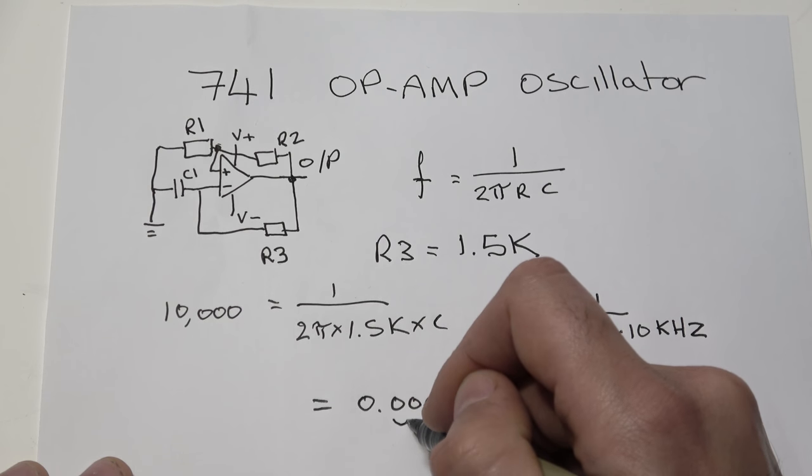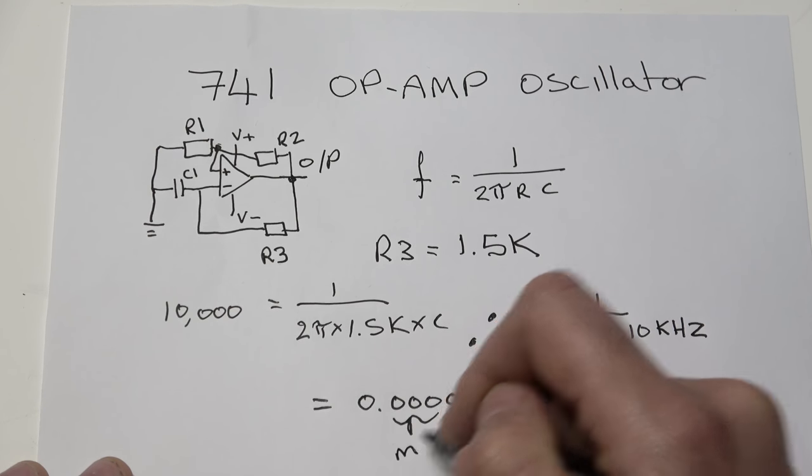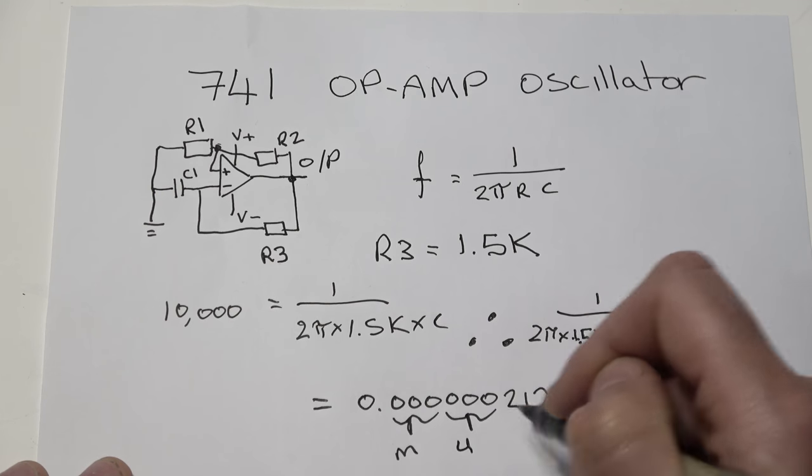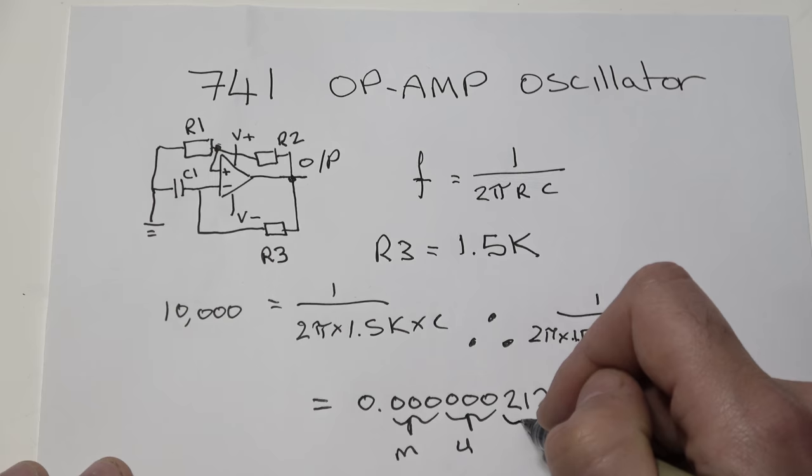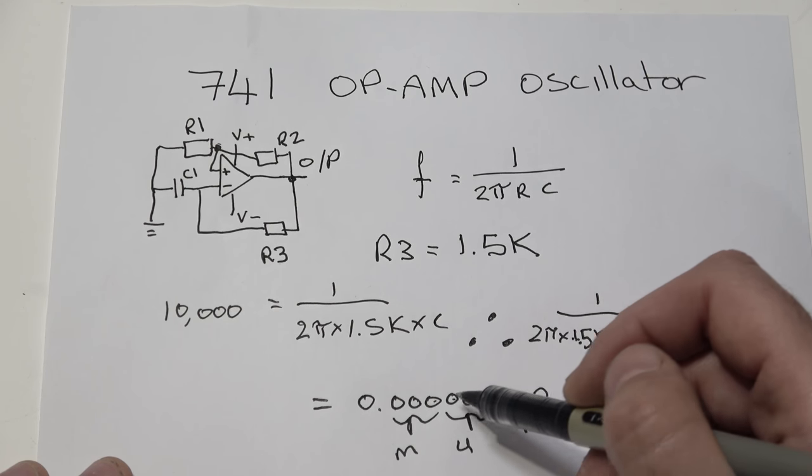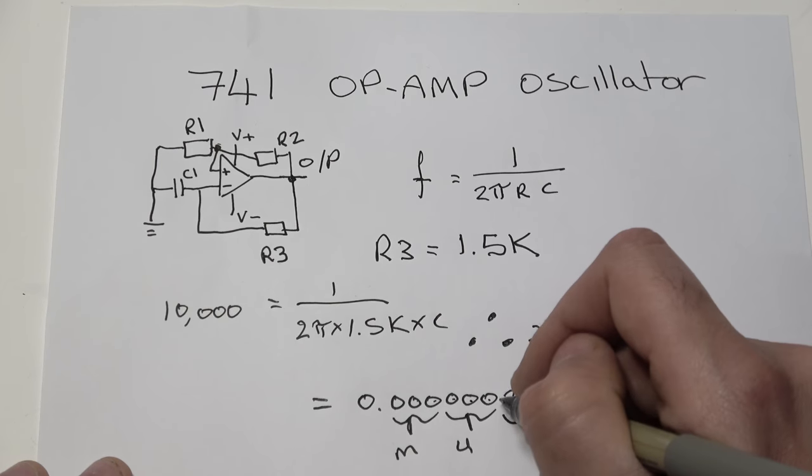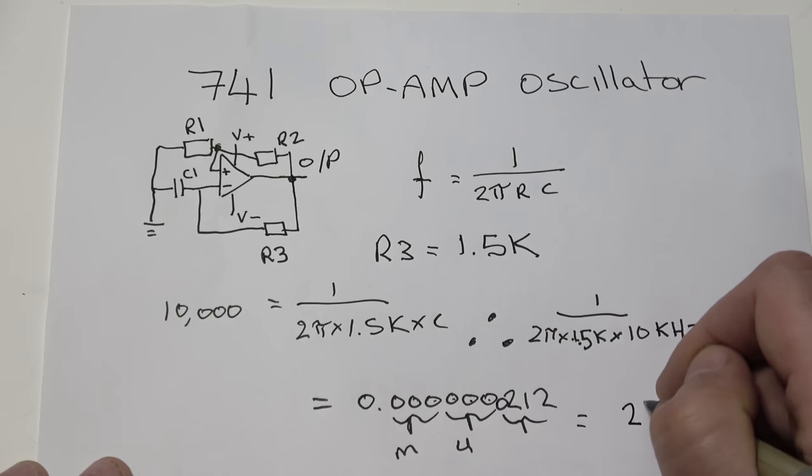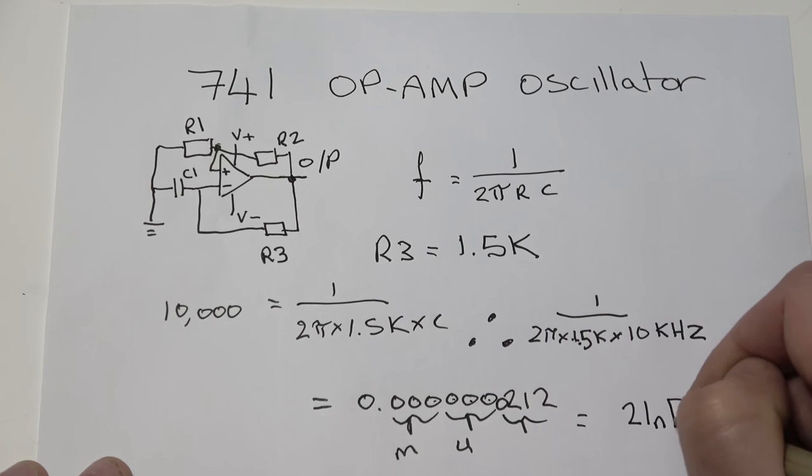And if we equals that out using a calculator, that's going to give us E to the minus 8, 0.0000212. I'll just double check that. That is our milli. These three here are our micro. And these ones here are going to be our nano. 1, 2, 3, 4, 5, 6, 7. I need an extra 0 in there. So our total value here is 21 nanofarad.